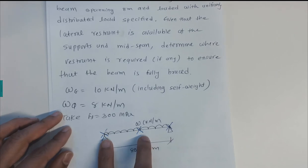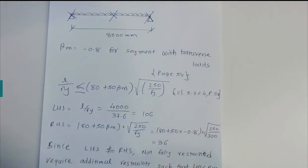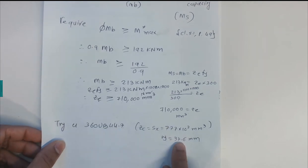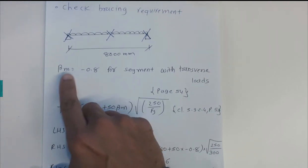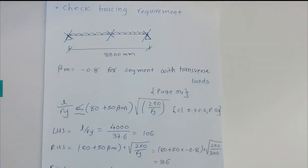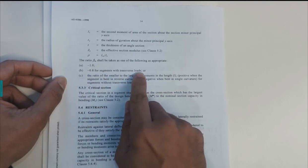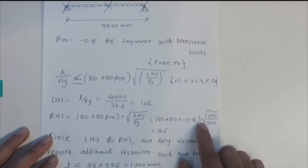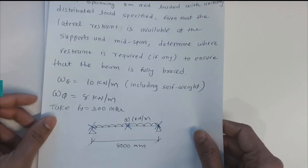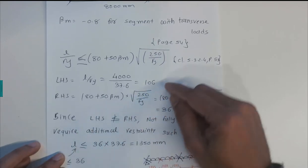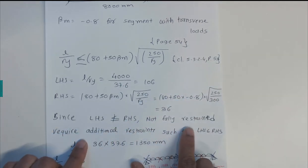With L = 4000 mm and ry = 37.6 mm, L/ry = 106. For the right-hand side: βm = −0.8 for a segment with transverse loads, as given in the Australian Standard page 54. So RHS = (80 + 50 × (−0.8)) × √(250/300) = 36. Since 106 > 36, the beam is not fully restrained, and additional restraint is required.